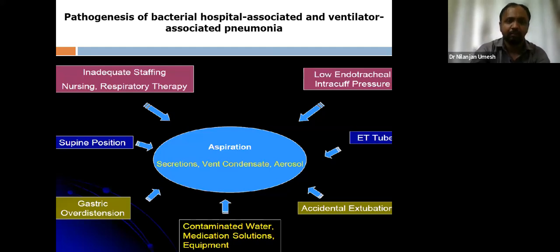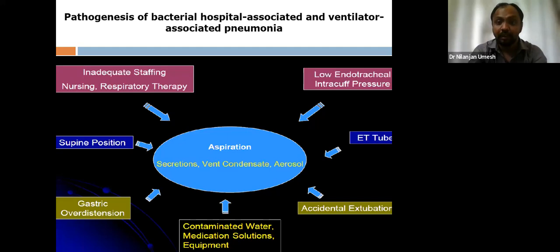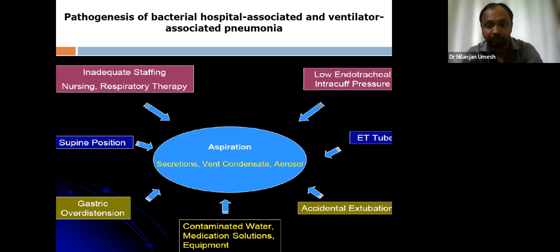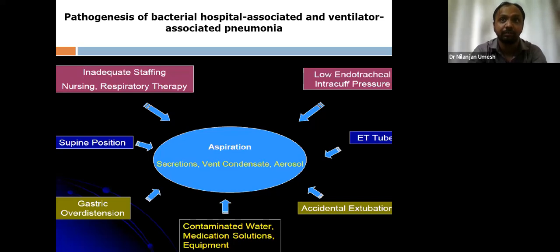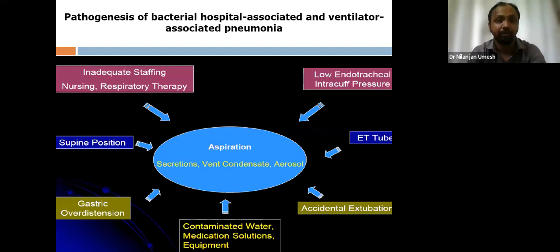From a nursing perspective, the primary cause of VAP is aspiration. This can result from increased secretions, ventilator condensate, aerosols, low endotracheal intracuff pressure — so cuff pressure must be checked regularly — frequent accidental extubation, contaminated water or medication solutions, contaminated equipment, gastric overdistension in patients with feeding intolerance, nursing the patient in a supine position, and inadequate staffing — for example, a nurse managing three or more ICU patients simultaneously significantly increases VAP risk.